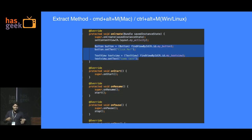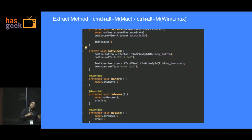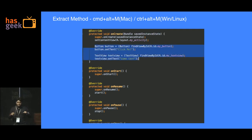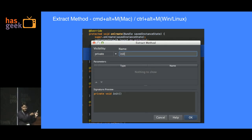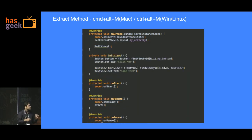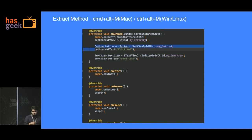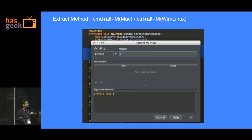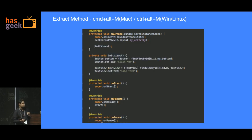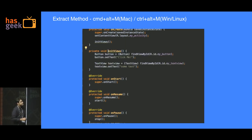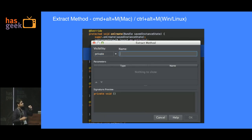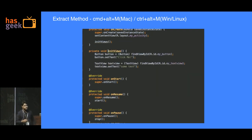A lot of times you start writing code, realize it's getting too cumbersome, and want to reuse it somewhere. The old way: create a new method, copy-paste, remove the original, then call it everywhere. With the Extract Method feature, you select the piece of code, and it declares all the implementation in a separate method and calls that method right away. As shown in the demo, four lines of code — give the method a name, press OK, and a different method is created for you.